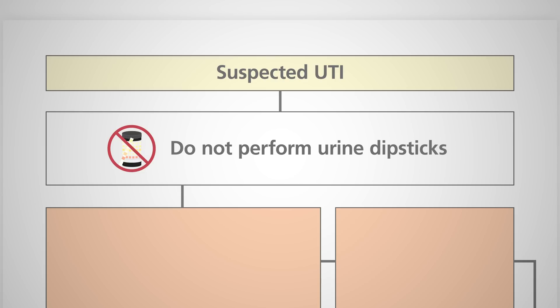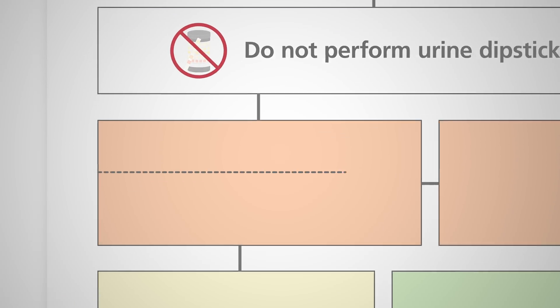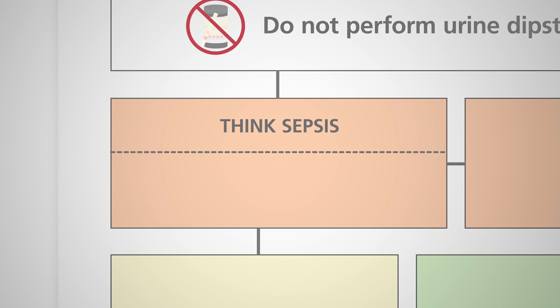Smelly or dark urine are not specifically signs of a UTI, but may be signs of dehydration. In anyone with a suspected infection, always think sepsis. Consider whether any signs of sepsis are present and use your locally approved sepsis tool or policy.